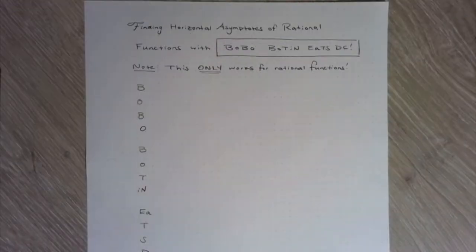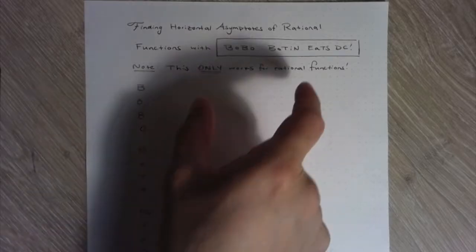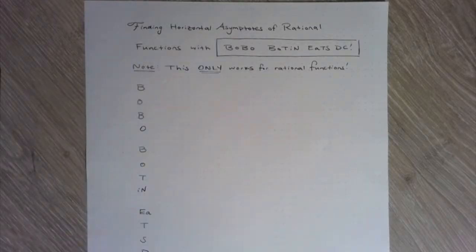In this video, we'll be finding horizontal asymptotes of rational functions with Bobo Button eats DC. So you want to think Bobo Button here is some sort of monster and it's coming, it's going to eat the District of Columbia.